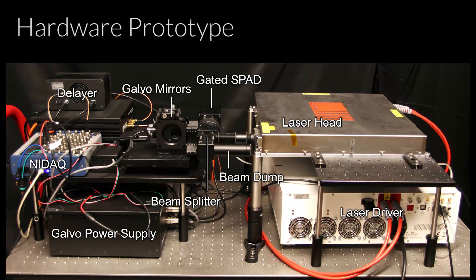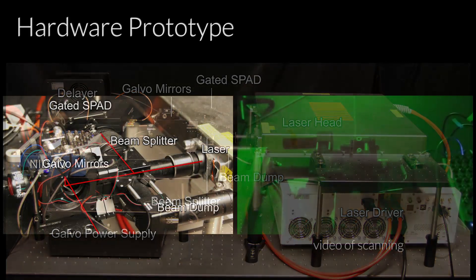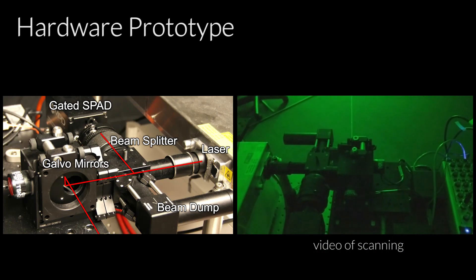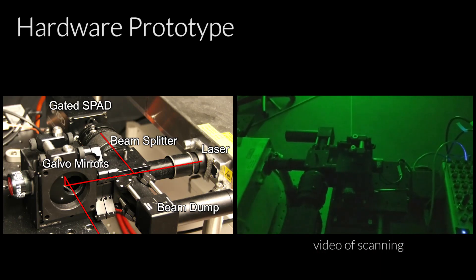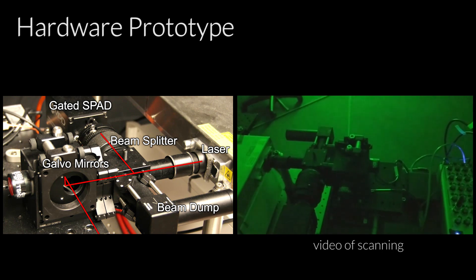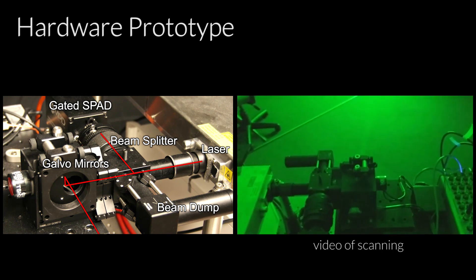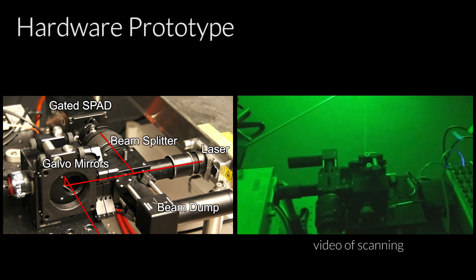Our hardware prototype consists of a laser, detector, electronics, and various optics and optomechanical parts used for focusing and scanning. This system enables fast, high-resolution scanning with an average laser power roughly 10,000 times greater than previous non-line-of-sight systems.